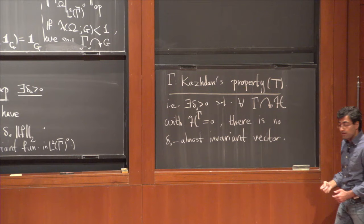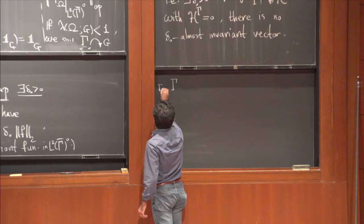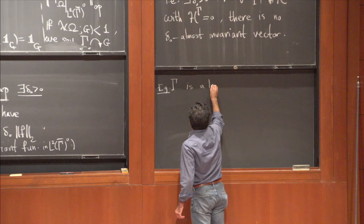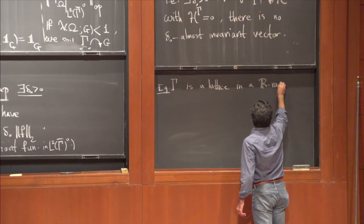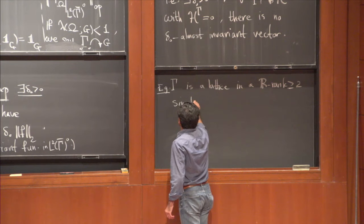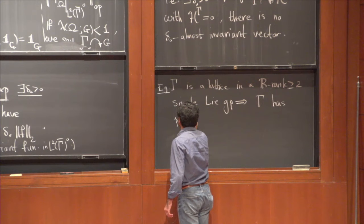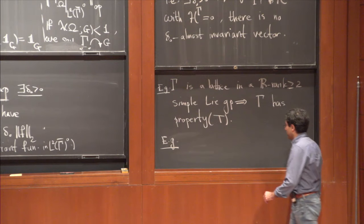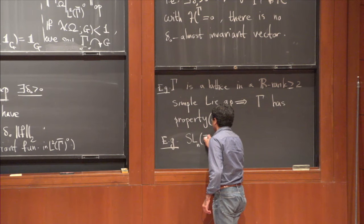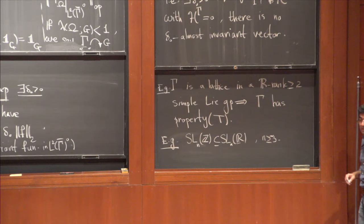Do we have such groups? Yes. Kazhdan, when he introduced this, proved that if gamma is a lattice in a higher rank — meaning real rank at least two — simple Lie group, then gamma has property T. Two examples: one is SL_N(Z), which is a lattice inside SL_N(R), and if N is at least 3, it has rank at least 2, so it has property T. Another example involves a quadratic form in five variables: x1^2 + x2^2 + x3^2 - sqrt(2)*x4^2 - sqrt(2)*x5^2.